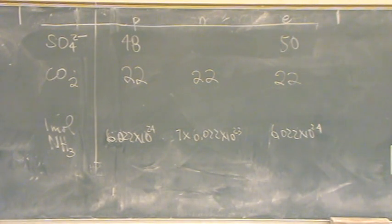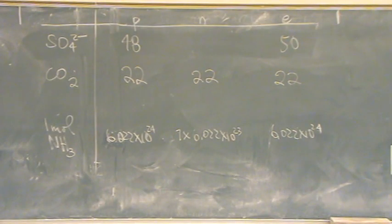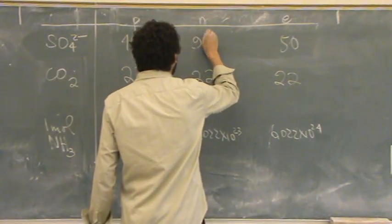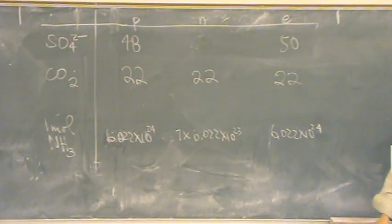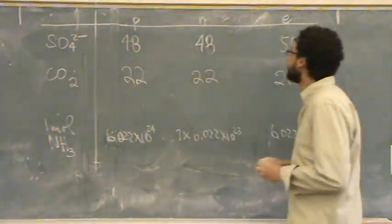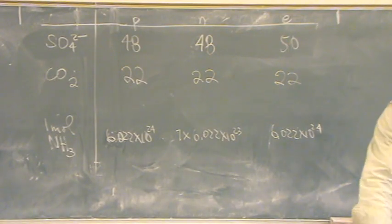Now let's do the neutrons. Sulfur has a mass number of 32, and oxygen has a mass number of 16, so 16 times 4 is 64, plus another 32 is 96 total mass. Minus 48 protons, that's 48 neutrons. Does that all make sense? Any questions?